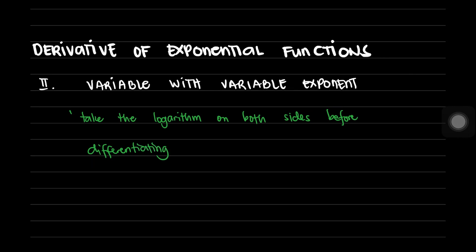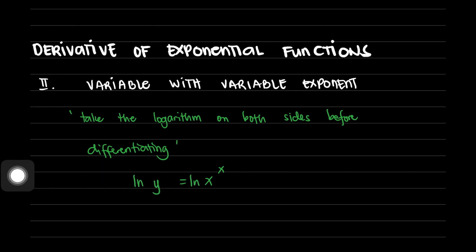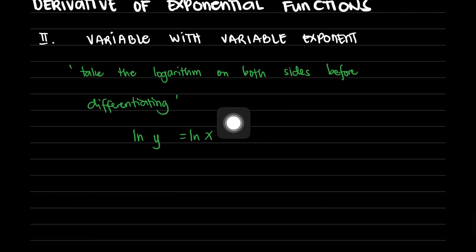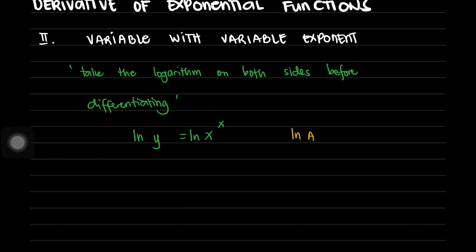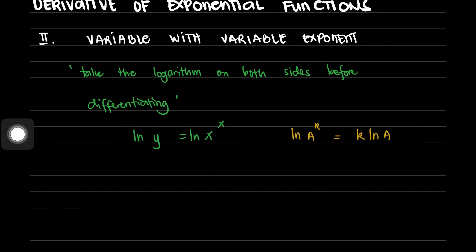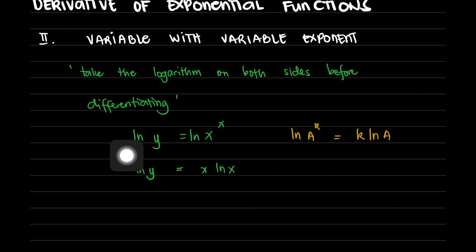So say for example we are given an exponential function where we have y equals x raised to x. Before we solve for y prime, we're going to take the logarithm on both sides first so that we can bring down this variable exponent. From the property of logarithm, ln of a raised to k equals k ln of a. Applying this property, the natural logarithm of y is now equal to x ln of x. After taking the logarithm on both sides, we now differentiate both sides with respect to x.